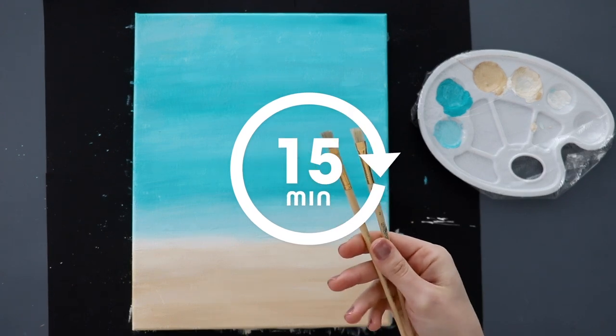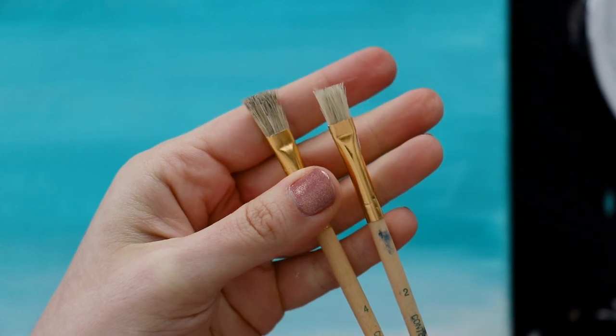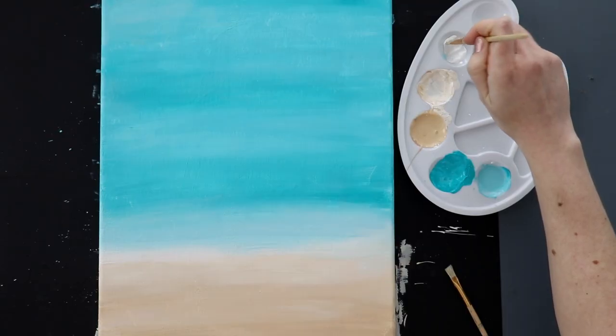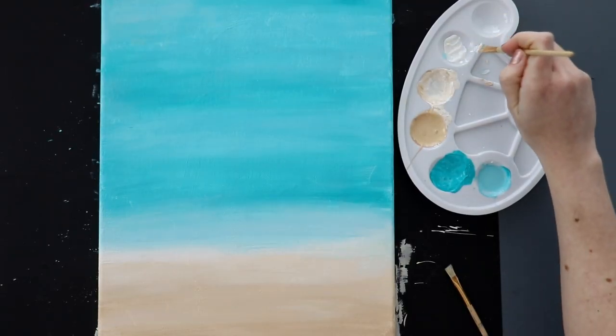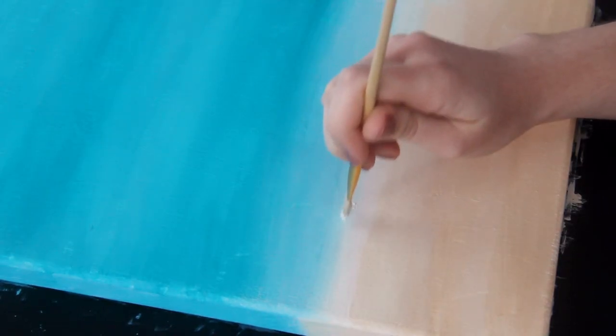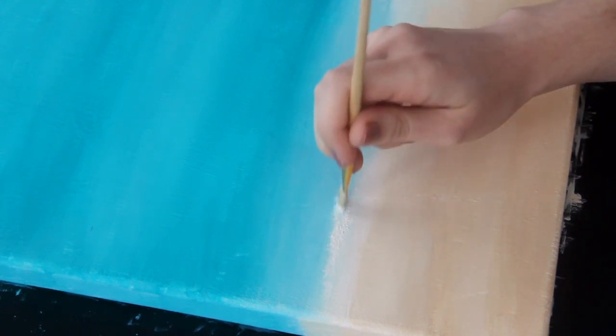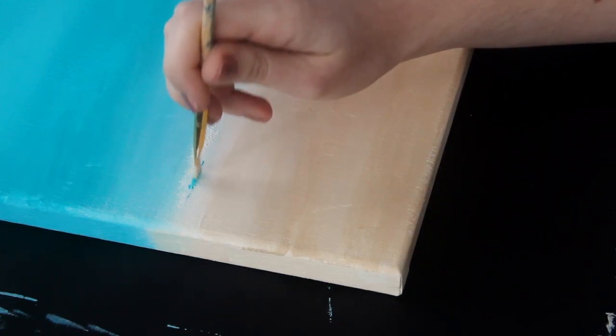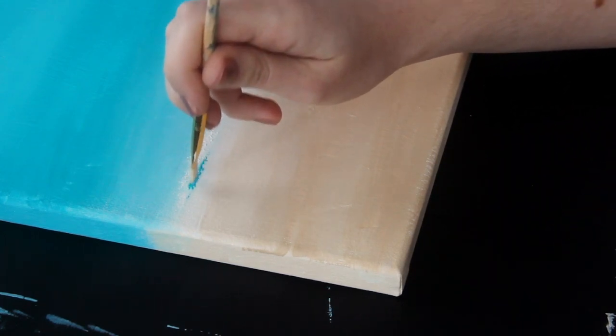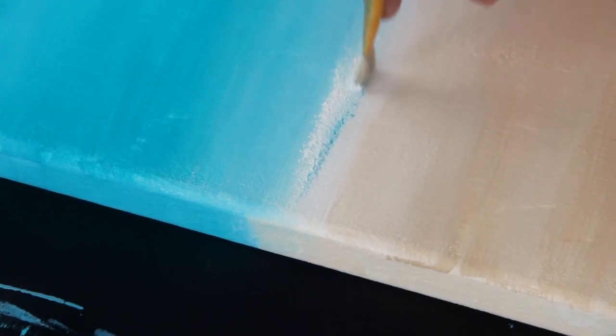So 15 minutes later, grab some small bristle paint brushes which have a rough texture. You're going to grab a little bit of white paint on the end of the brush and then press it into the canvas using an up and down motion. This will give us a texture that's like ocean waves. You can also use the same technique to add some teal paint right under the white to give it some dimension.